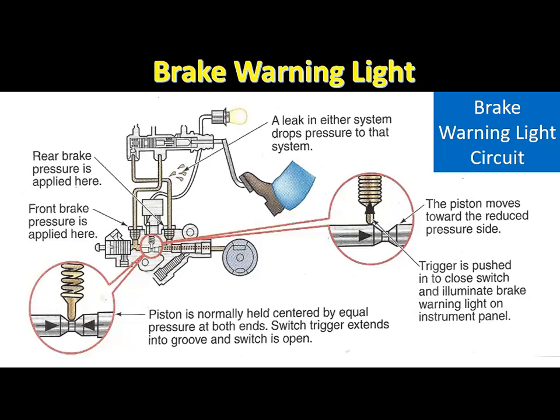The red brake warning light in the instrument panel is connected to a switch in the combination brake valve. The combination valve also contains two hydraulic valves: the metering valve and the proportioning valve. Pressure from each master cylinder piston is supplied to opposite ends of the combination valve piston that operates the brake warning light. If the master cylinder fluid level is satisfactory and both pistons supply equal pressure, the piston in the brake warning light circuit remains centered, the brake warning switch is open, and the warning light is off.